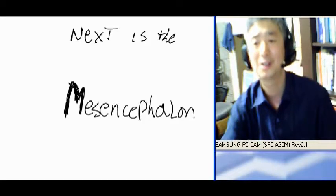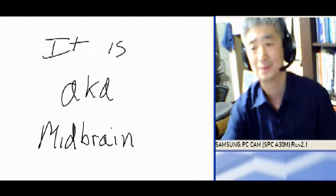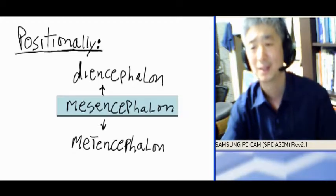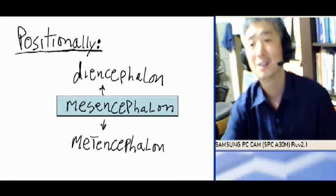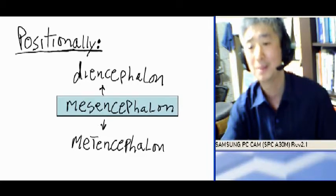Next is the mesencephalon. It is also known as the midbrain. Positionally, it is between the diencephalon and the metencephalon.